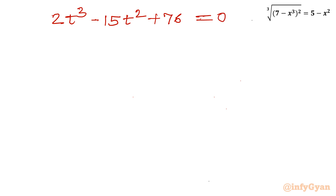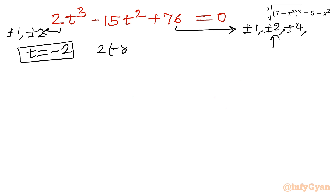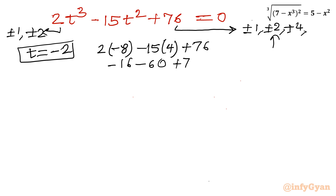I will use the rational root theorem and synthetic division. The eligible factors of 76 are plus or minus 1, 2, 4, 19, 76. Dividing by the leading coefficient gives candidates plus or minus 1, 2. Testing t equal to minus 2: 2 times (minus 2) cubed minus 15 times (minus 2) squared plus 76 equals minus 16 minus 60 plus 76 equals 0. Yes, so t equal to minus 2 is one solution.